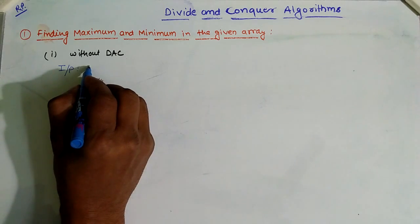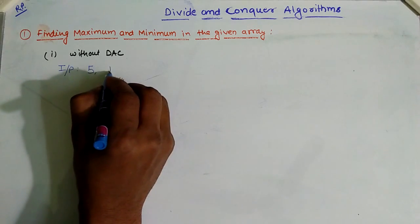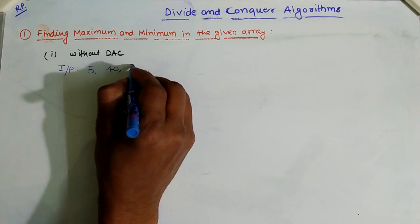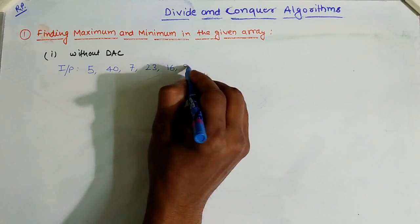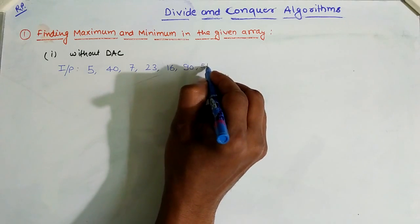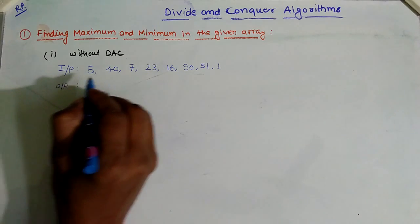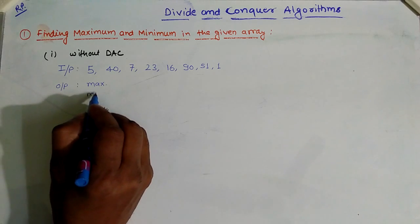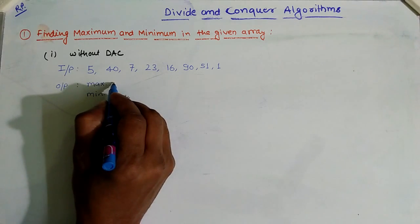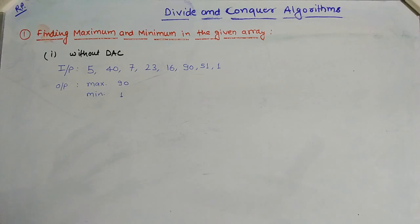Let's take the input. Suppose I have an array which contains elements like 5, 40, 7, 23, 16, 90, 51, and 1. The output should be one maximum element and one minimum element. So in this array the maximum output should be 90 and the minimum output should be 1. Now let's write the algorithm for the same.